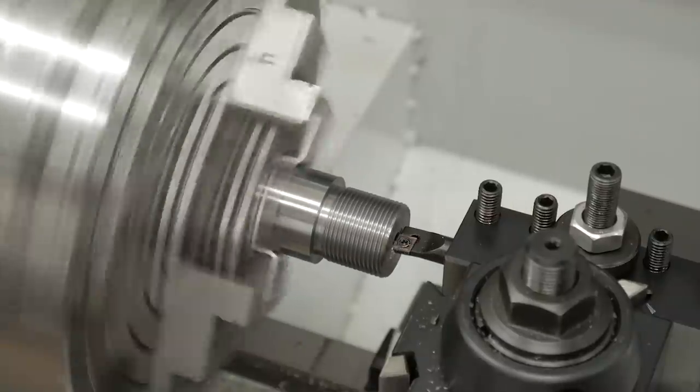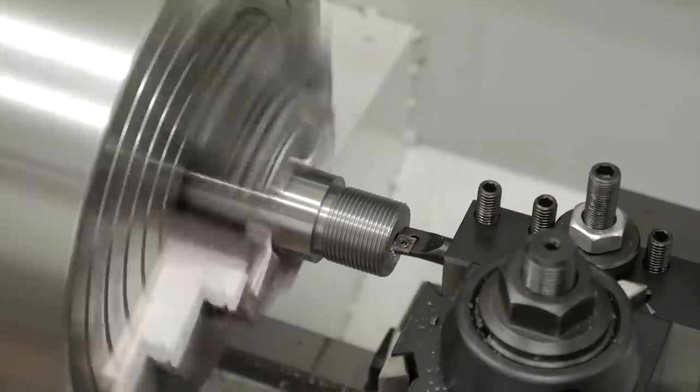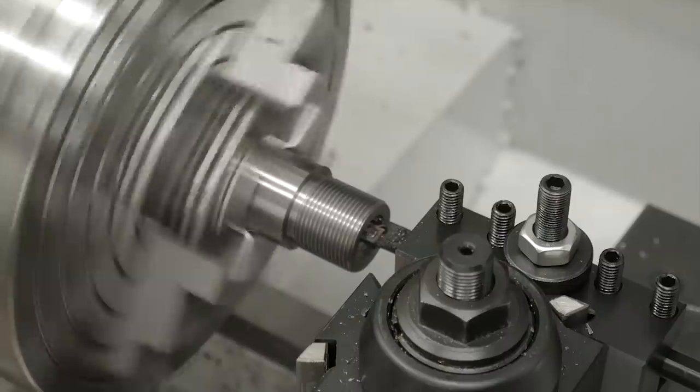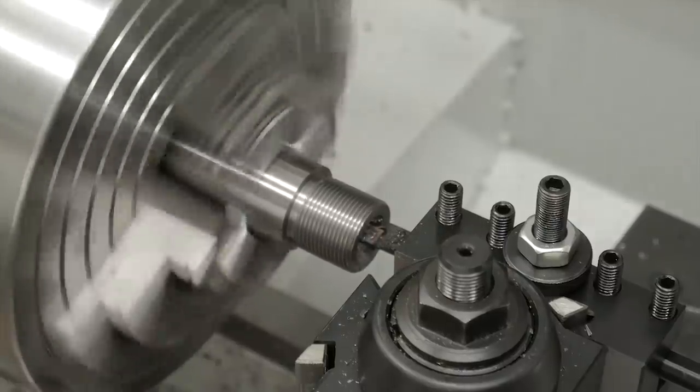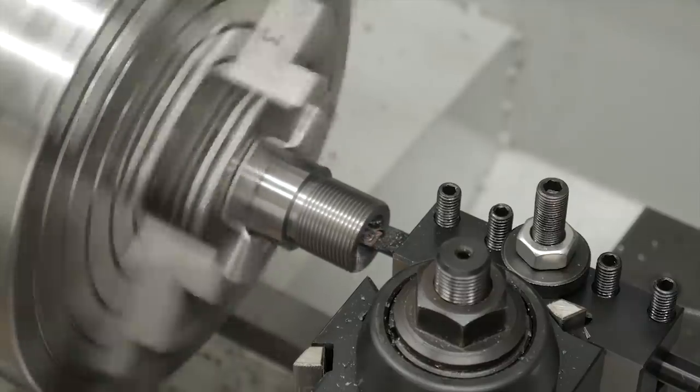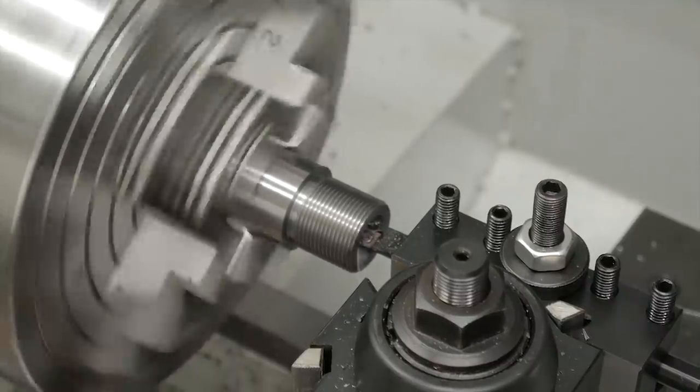I took multiple passes cutting the counterbore to depth, leaving the diameter slightly undersized. This gave me the ability to follow that up with a couple boring passes to get the counterbore diameter dead on. Once the counterbore was finished, it was time for chambering.